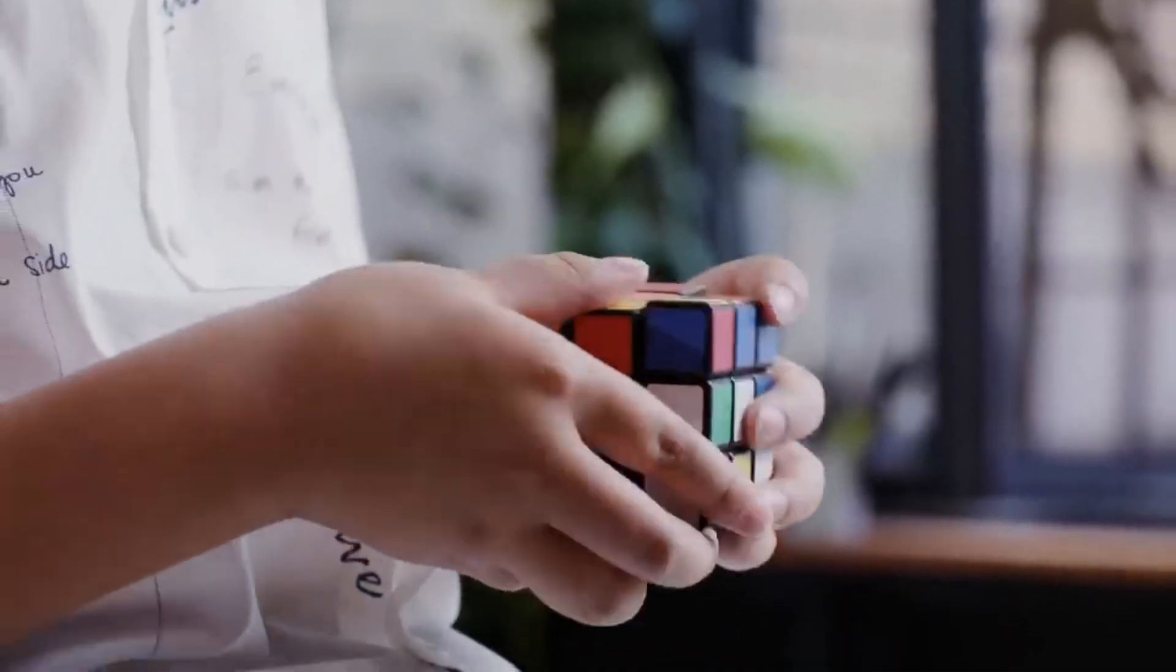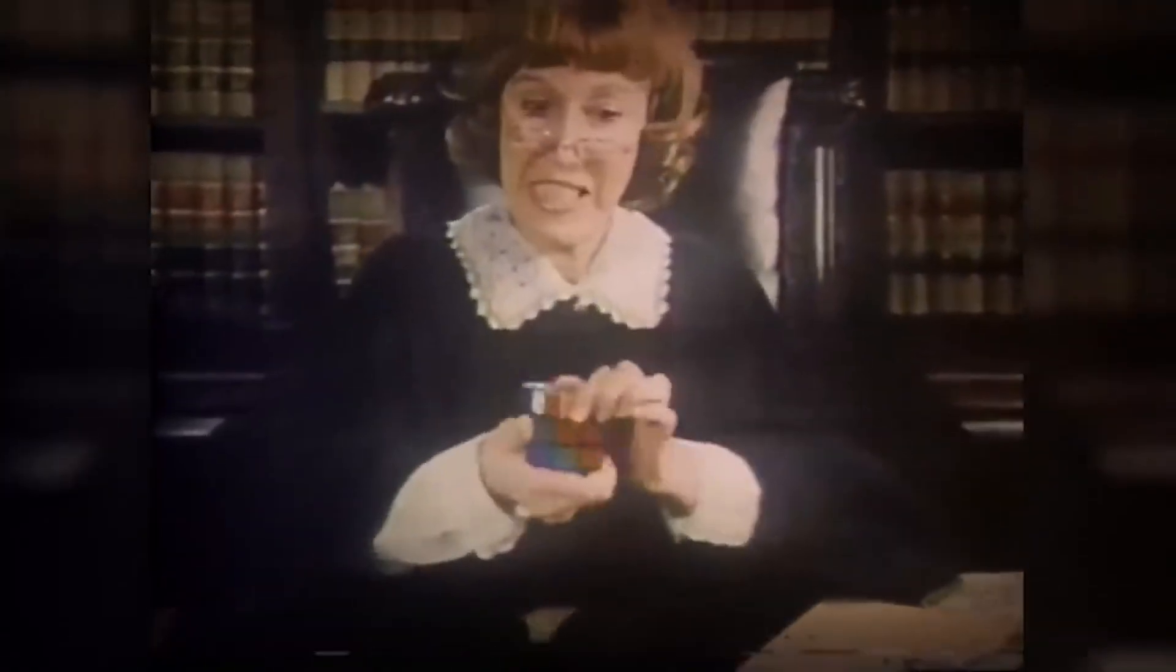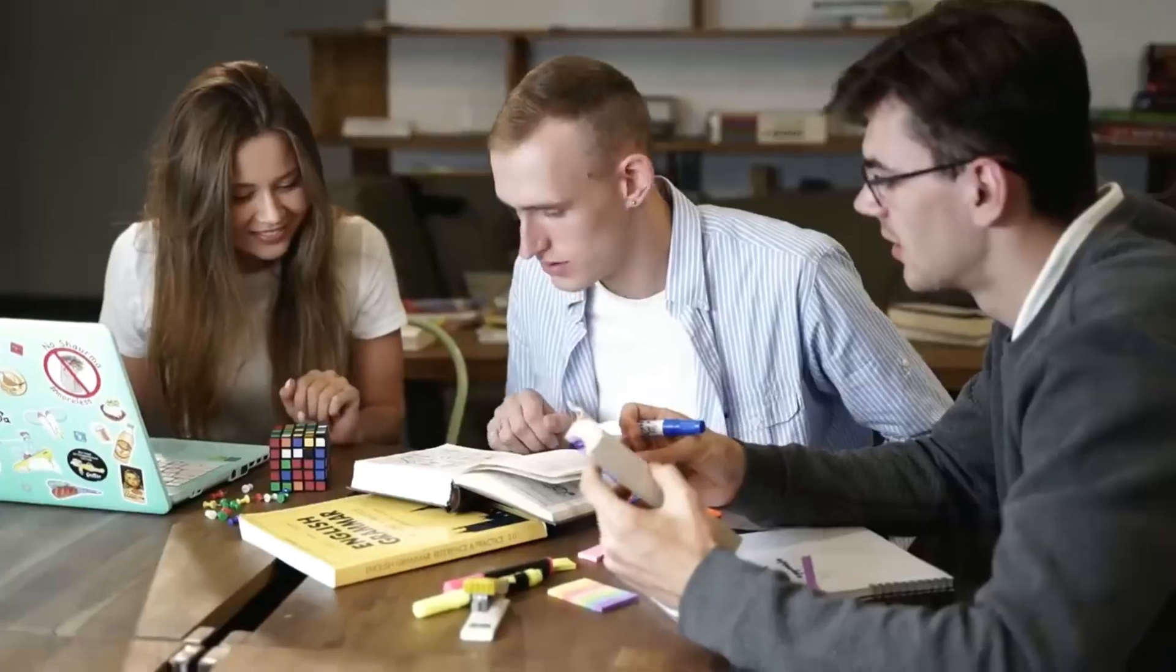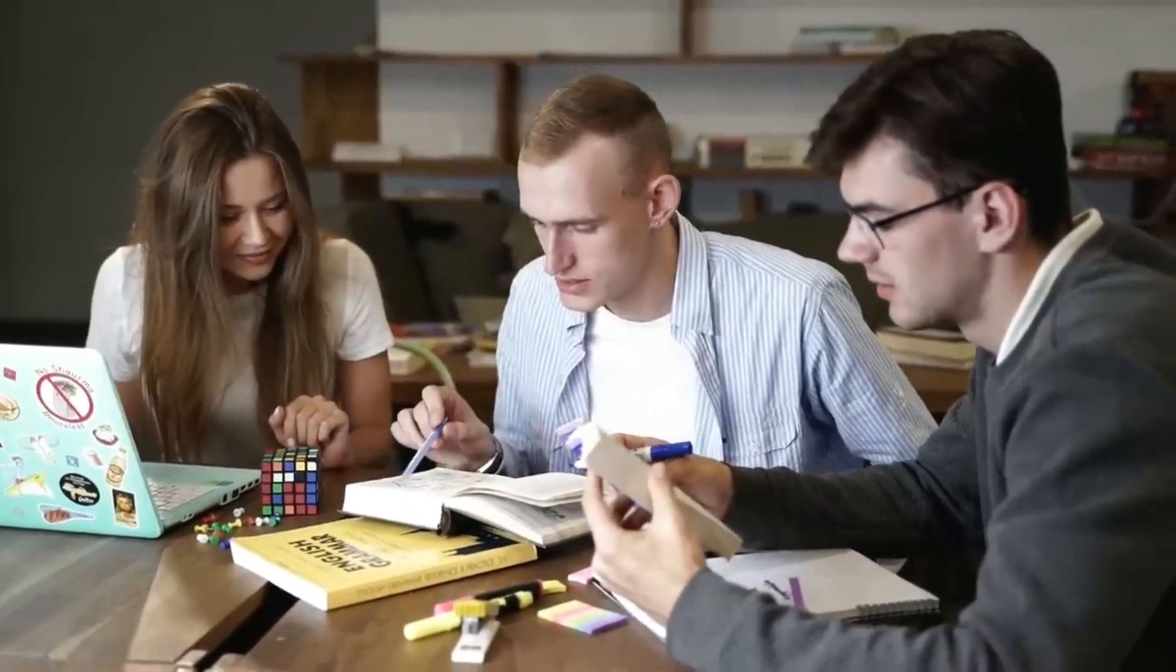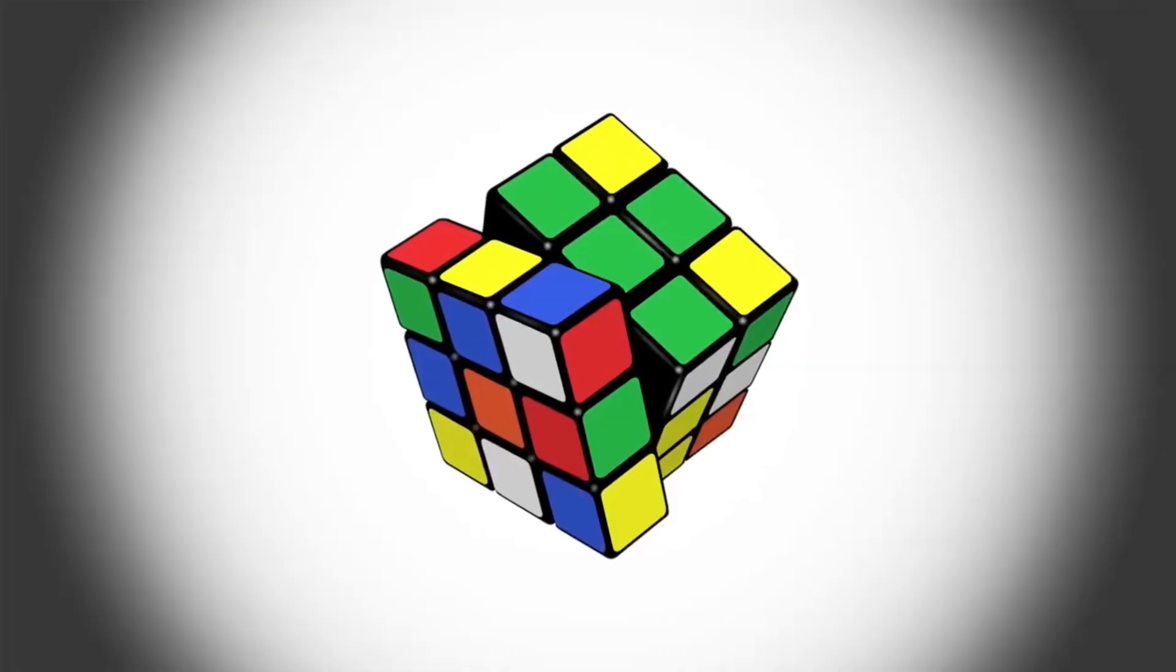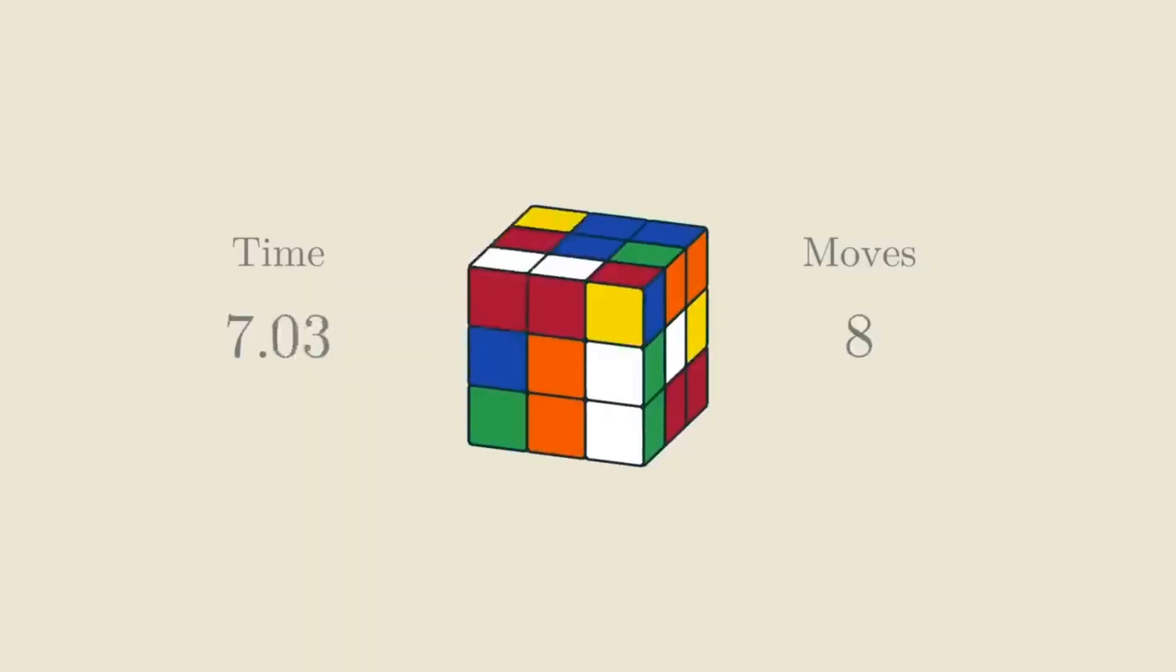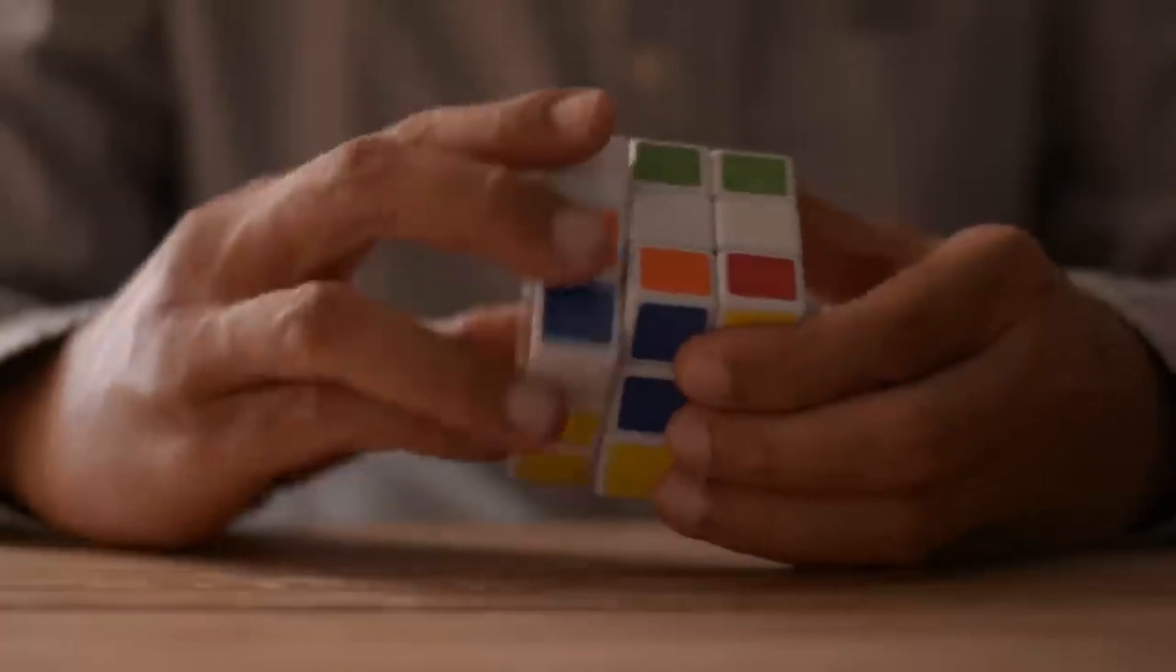The Rubik's Cube, an iconic creation of the Hungarian engineer Erno Rubik, saw the light of day in 1974. Since then, it has captivated millions around the world with its combination of simplicity and complexity. With its six faces and 54 colored stickers, the magic cube, as it is called by some people, is a mathematical and mental challenge.